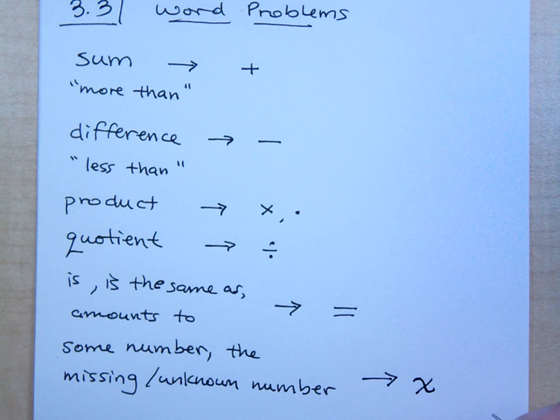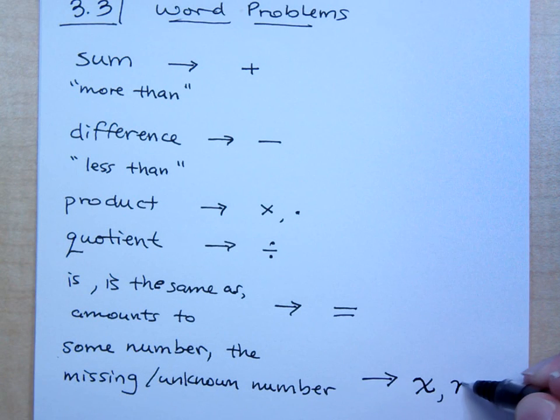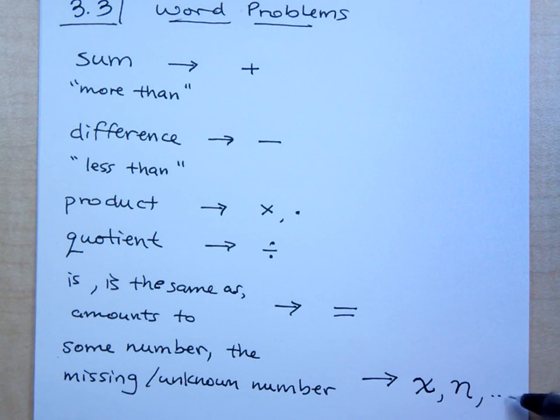Maybe you write X. You write a variable X. Sometimes you may use N. It doesn't really matter. You're just picking a variable because you don't know what this value is, but you want to have some kind of placeholder for it. So we use a variable for that.